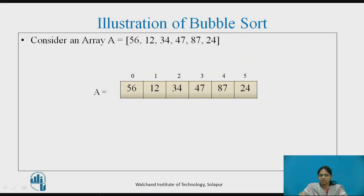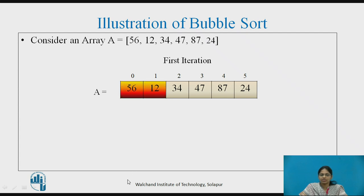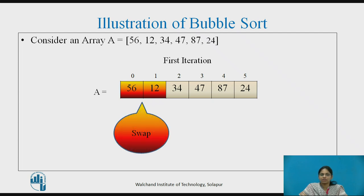Let us see the illustration of bubble sort. Consider an array A consisting of 6 elements. The array elements are placed in order where the first element is at the zeroth index and the last element is at the n-1th index. In the first iteration, the comparison of the first two elements is done. We can see that A[0] is greater than A[1], so we need to swap the elements.